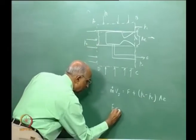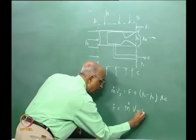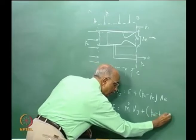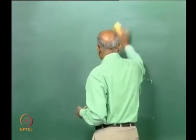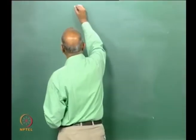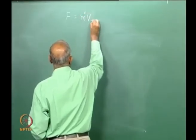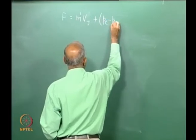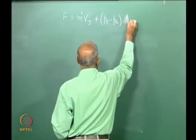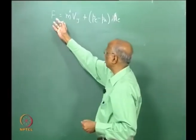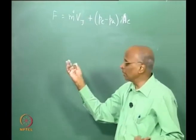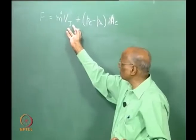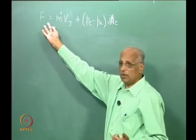Writing the force equation, the net thrust is equal to m_dot × Vj plus (Pe − Pa) × Ae. This is a slightly modified thrust equation from what we had before when we assumed Pe = Pa and got F = m_dot × Vj. Now we add the pressure term (Pe − Pa) × Ae. To get the full expression for thrust, I need the expression for m_dot × Vj, which we already derived, and now I need to derive an expression for m_dot.